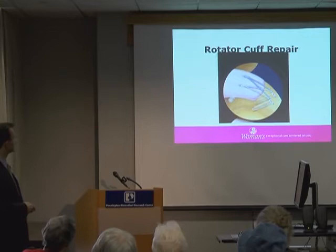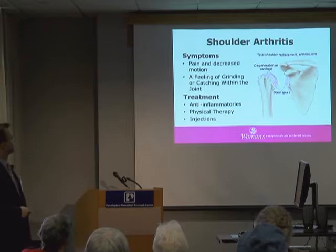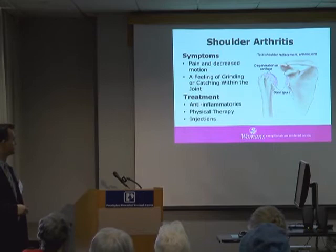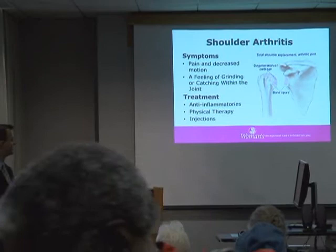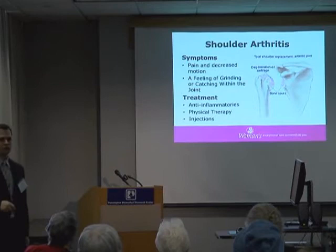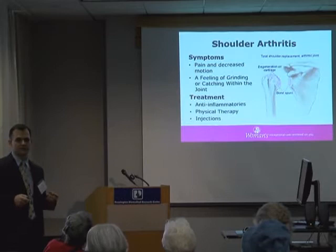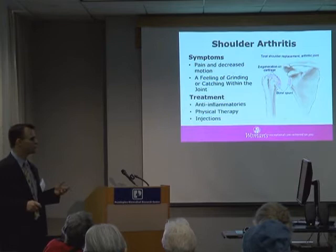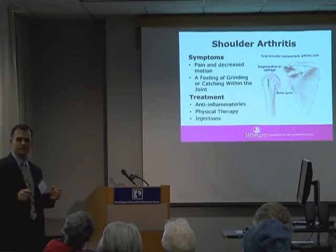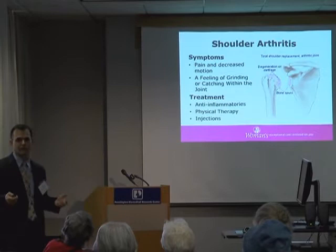Moving on to shoulder arthritis — it's essentially wear of the cartilage in the joint. That smooth glistening surface degenerates and you end up with rougher cartilage. Arthritis is actually relatively uncommon in the shoulder because, unlike the knee, the shoulder is not a weight-bearing joint. Arthritis develops much more frequently in the knee because you're always putting weight and stress on it.